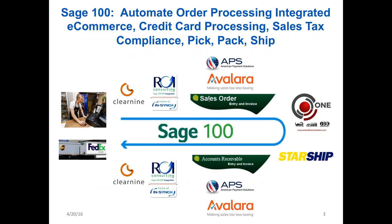That invoice goes through ROI Consulting's InSync application in the background to populate Clear 9's web interface, so all shipment information populated in Sage 100 is reflected back on the internet. The customer can view all the details of their order and track where it is in the process of arriving on site. With that, I'll hand it over to Craig Jacobs to kick off the presentation.